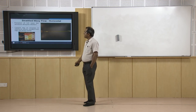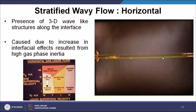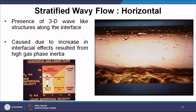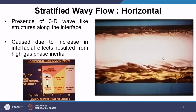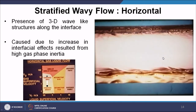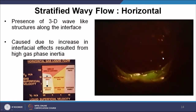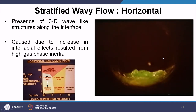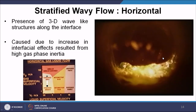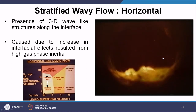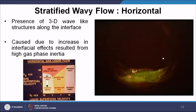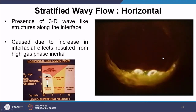Increasing the gas superficial velocity from stratified smooth conditions produces stratified wavy flow. The smooth interface now forms waves — a 3D wave-like structure is present. In the pipe cross section, waviness can also be observed. This stratified wavy flow pattern occupies the region of increased gas superficial velocity in the flow regime map.